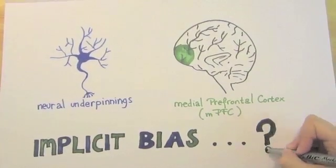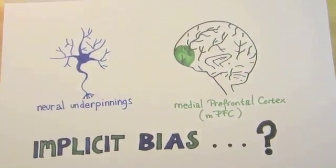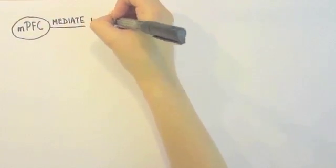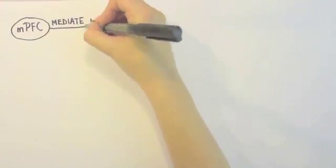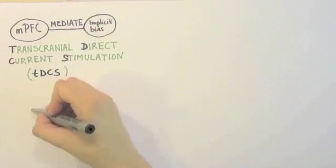However, the exact role of the medial prefrontal cortex with regard to this phenomenon is still unclear. In this study, we directly assessed the role of the medial prefrontal cortex and its ability to mediate implicit bias by using transcranial direct current stimulation.